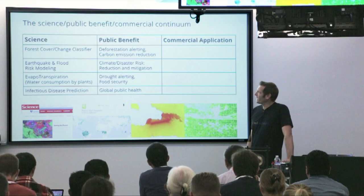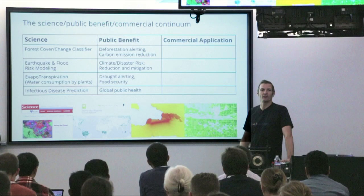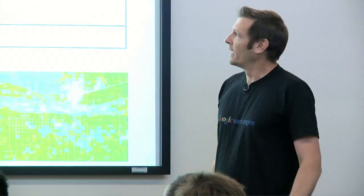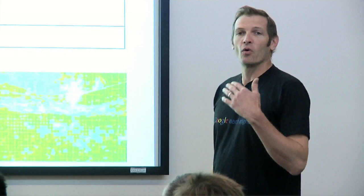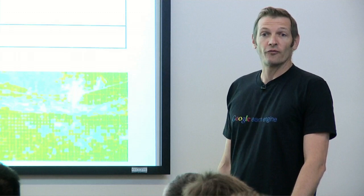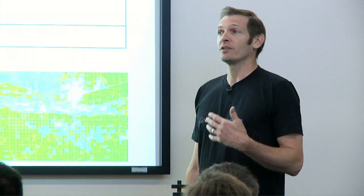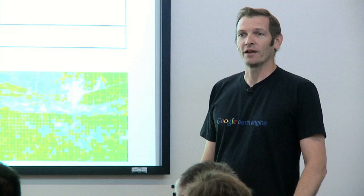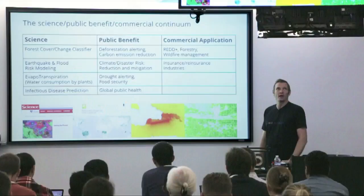It turns out there are actually other applications beyond just research, public benefit, and educational uses. Looking at some of the core use cases we've been focusing on: forest cover and land classification has been used for deforestation alerting and carbon emission reduction, but it's also really useful for REDD+, which is an economic framework for compensating countries to basically not degrade their forests. There are also a lot of different commercial use cases in general forestry management, wildlife management, and agriculture.